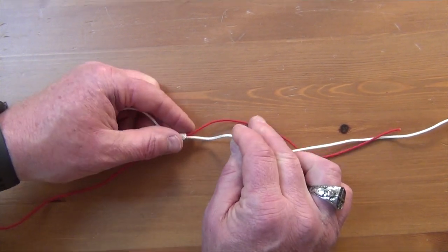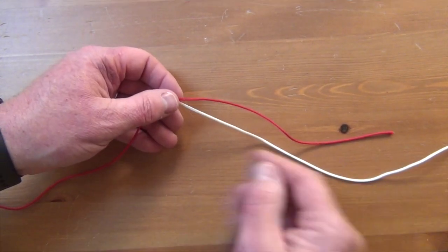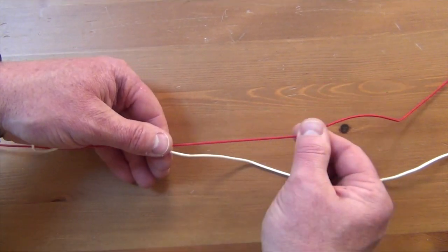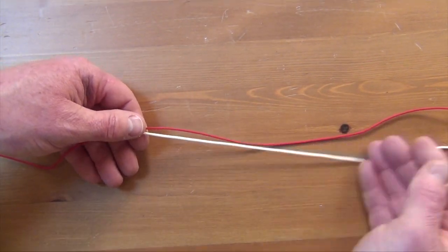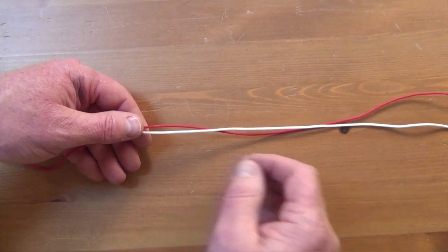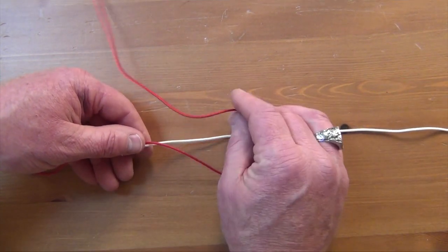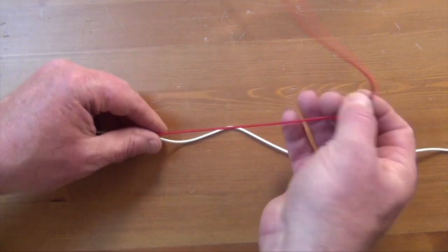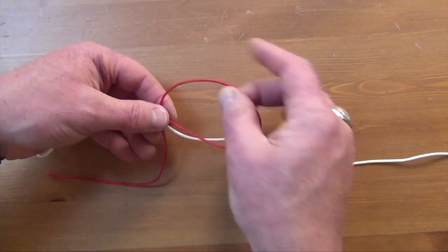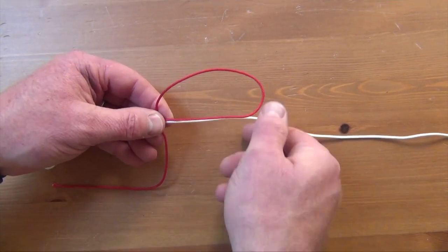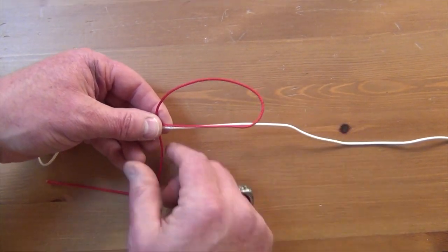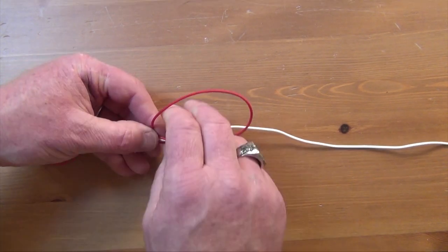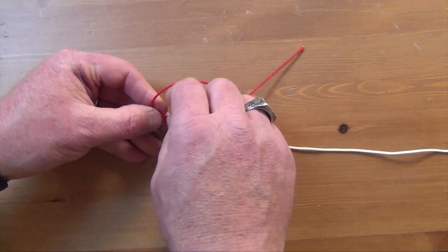And typically you'll be able to pull some of that braid through up onto the fluorocarbon if you need to. Now we're going to do the exact same thing on the other side. So we've got our braid here along our leader material, our fluorocarbon. Now we're going to do the same thing here, we're going to wrap this seven times.